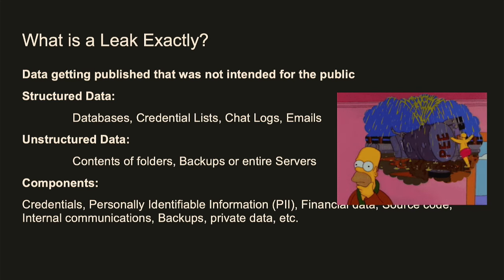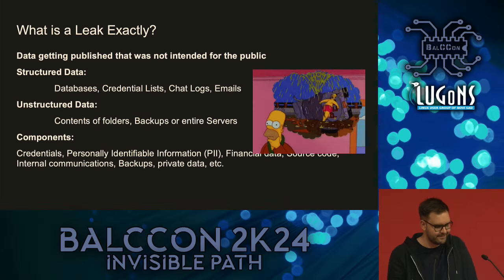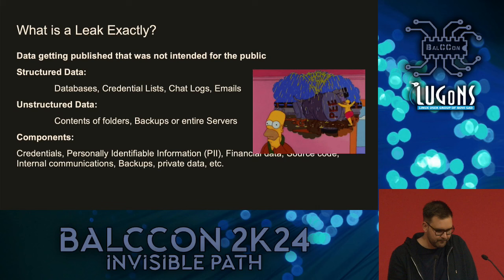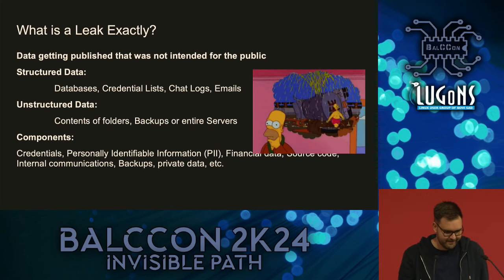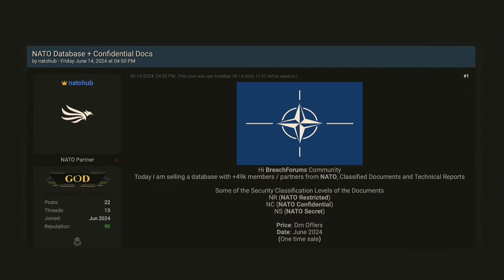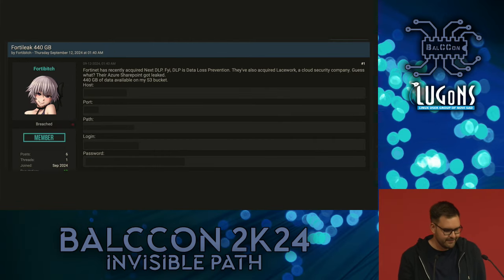What exactly is a leak? Basically all the data that is getting published that should not really be published. There is a difference between structured data like databases and credential lists, or unstructured data where ransomware groups just upload a whole server. Most of the time they contain some personal identifiable information. For example, on breach forums there is a NATO database getting sold - that's structured data. Or the Fortinet leak where someone just said, here's 440 gigabytes of stuff, connect to my S3 bucket and download it.